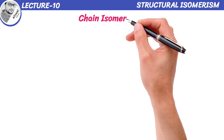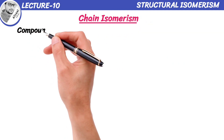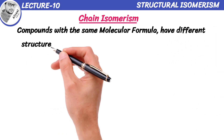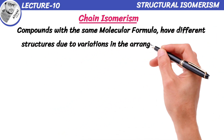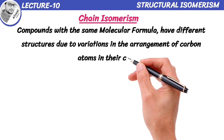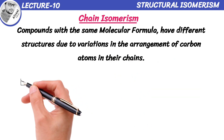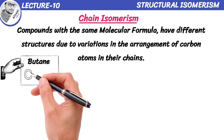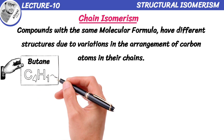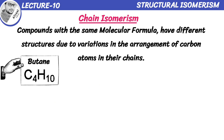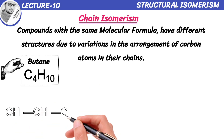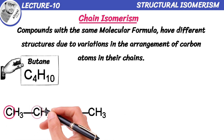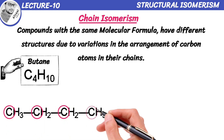Chain isomerism refers to the phenomenon where compounds with the same molecular formula have different structures due to variations in the arrangement of carbon atoms in their chains. To illustrate this, let's take a look at an example using butane. Butane is a hydrocarbon with 4 carbon atoms and 10 hydrogen atoms. In its simplest form, butane exists as a straight chain molecule with all 4 carbon atoms arranged in a single line, known as N-butane.